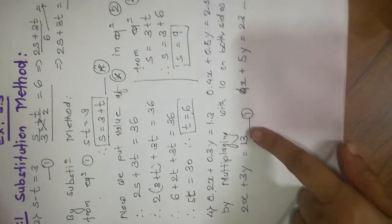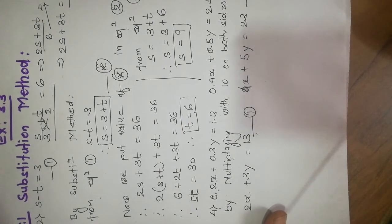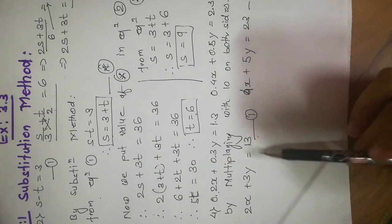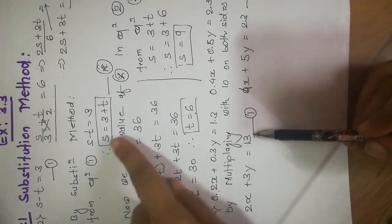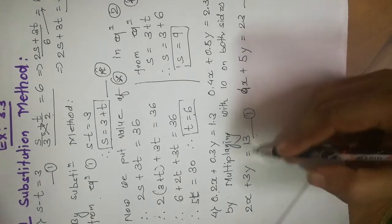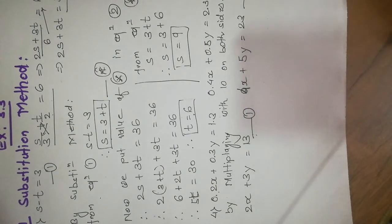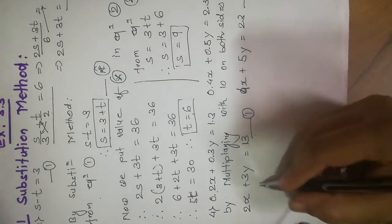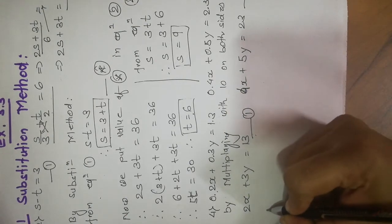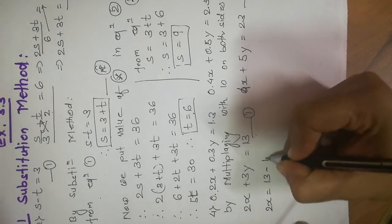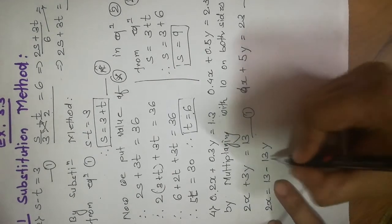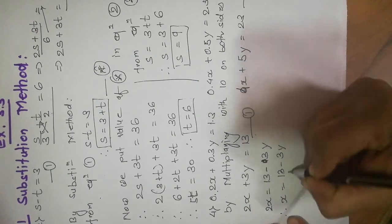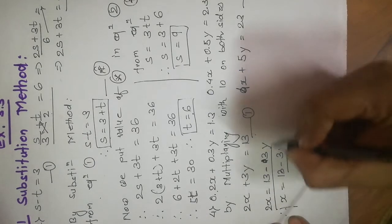In the substitution method, I prefer the constants on the RHS side so we can find the values of variables more easily. From these two equations you can choose any equation to find the value of one variable. I take the first equation: 2x equals 13 minus 3y, and therefore x equals (13 minus 3y) divided by 2. This is our equation star.